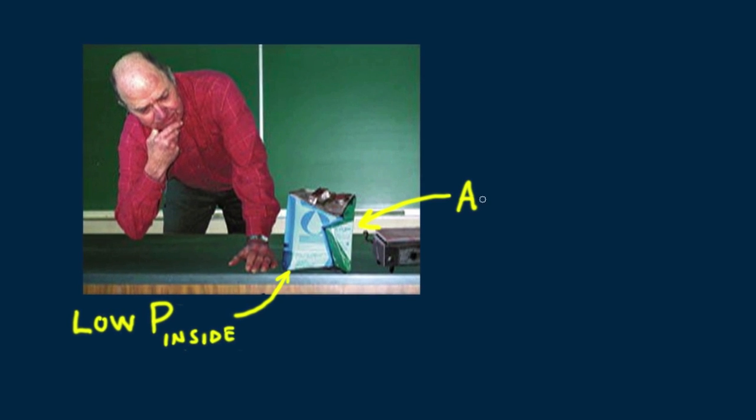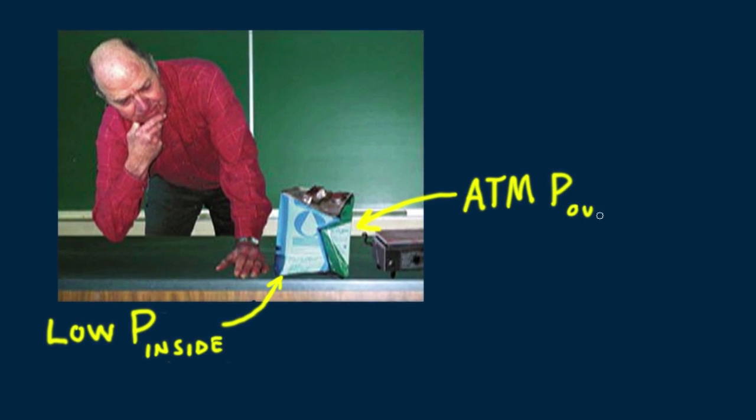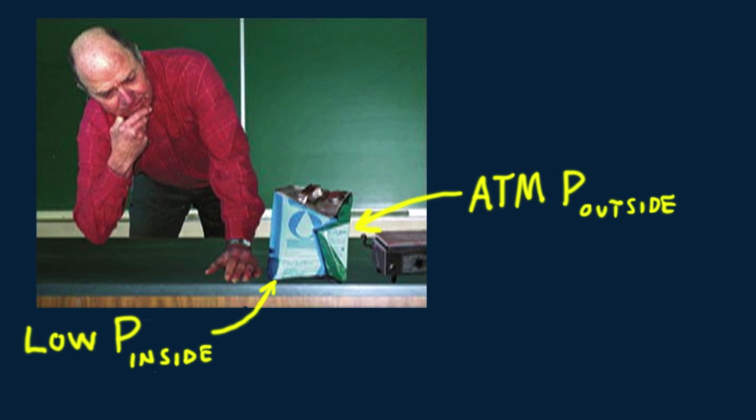Dan Johnson shows what happens to a gallon can when a partial vacuum occurs inside the can. Low pressure inside, not quite a vacuum, can't balance the outside atmospheric pressure. So the relatively greater atmospheric pressure on the outside crushes the can.